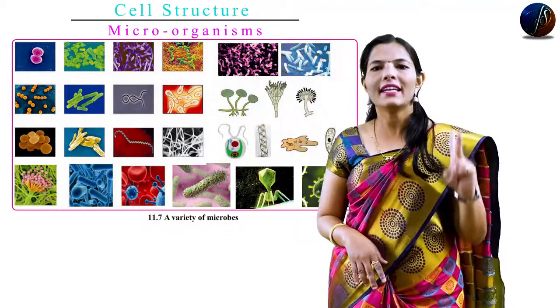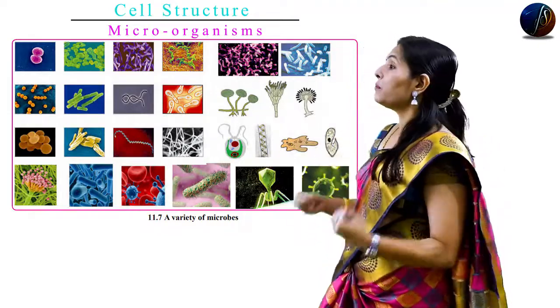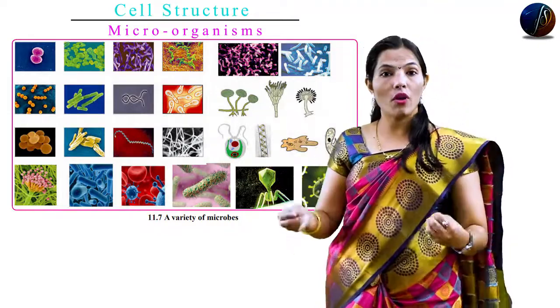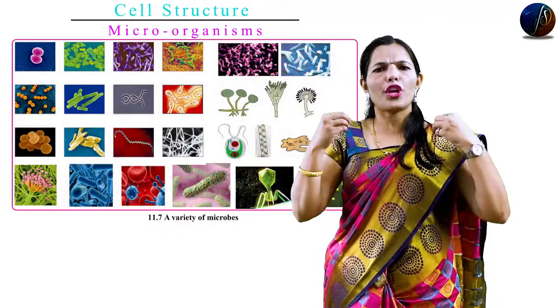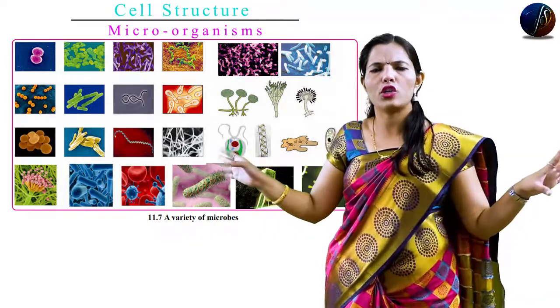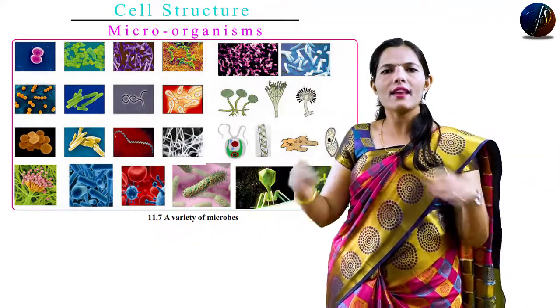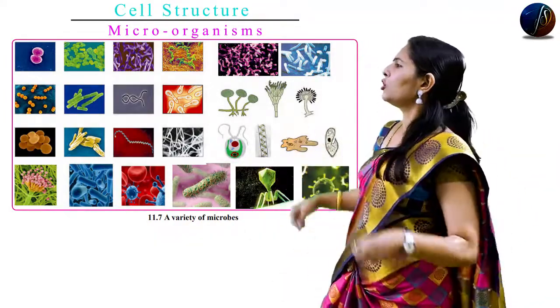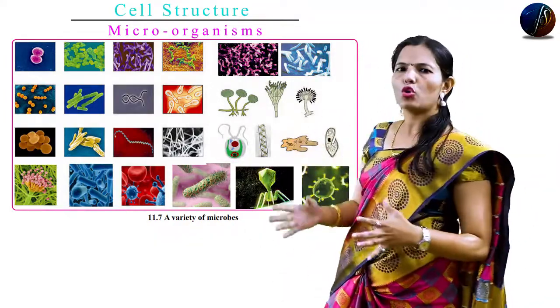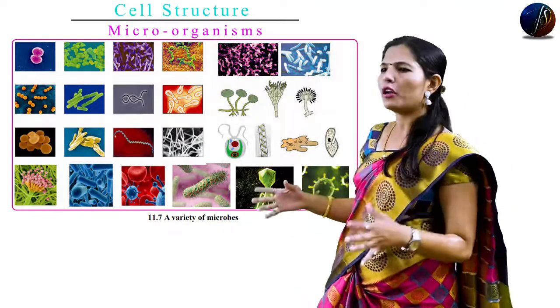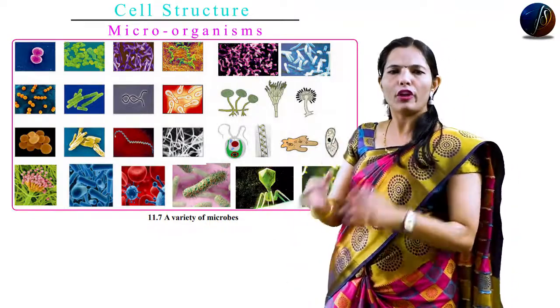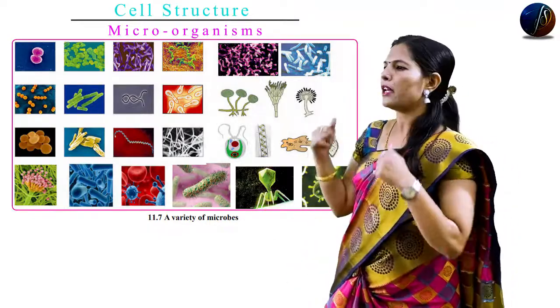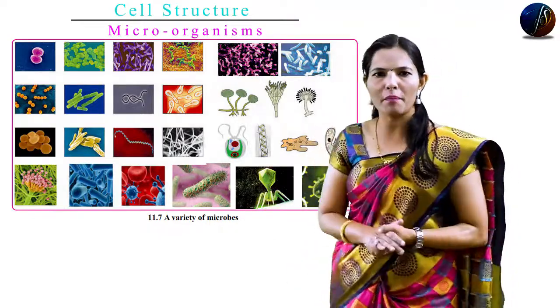Some microorganisms survive in extreme cold conditions — in the ice region, in the polar region. The temperature there can be as low as minus 48 to minus 50 degrees, and yet certain microorganisms survive in those conditions.